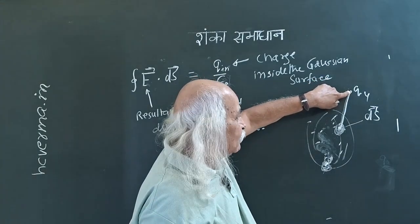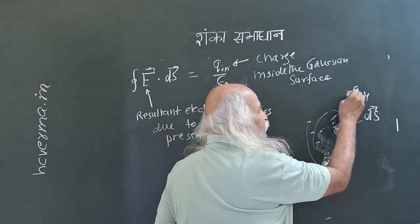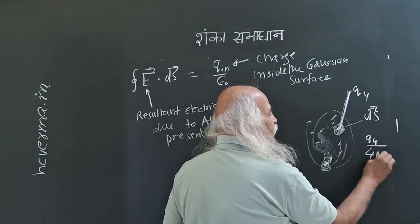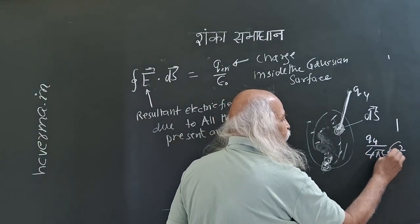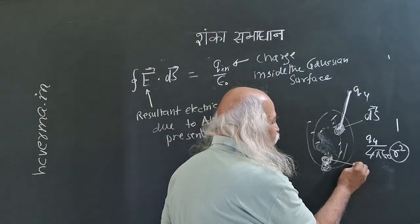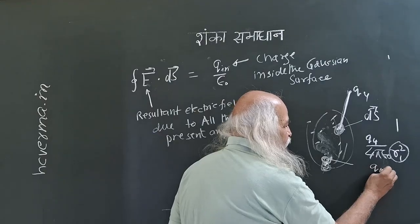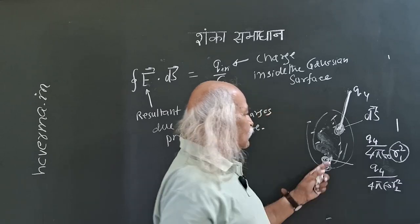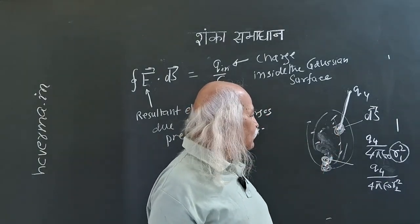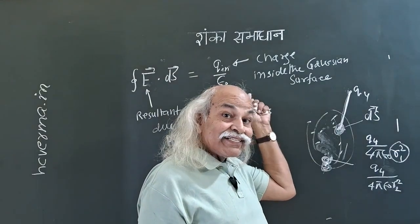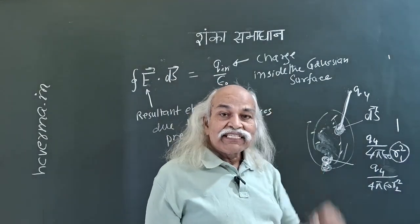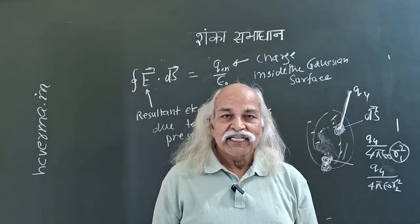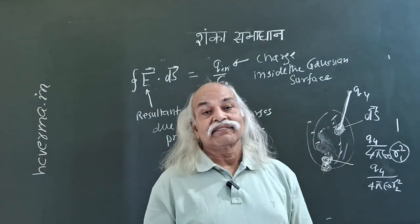Then Gauss's law is fine. The field here will be given by q divided by 4 pi epsilon naught r squared. And the field at a different point will be different because the distance r is different. So using Gauss's law, you cannot directly get what the electric field is at each specific point. But Gauss's law is still true. Gauss's law can be applied to get the electric field at a certain point only for certain symmetric charge distributions.